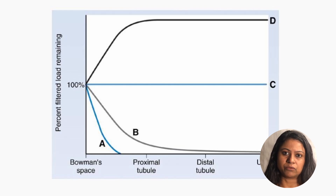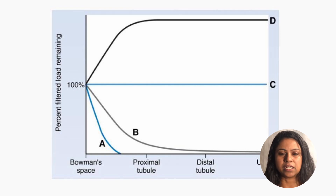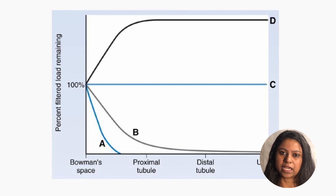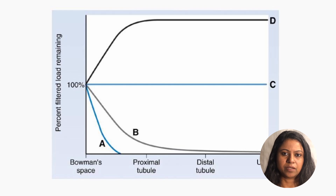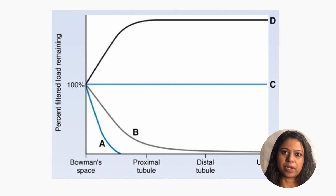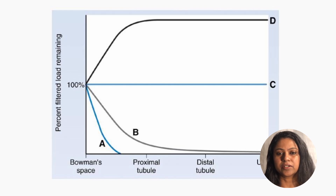Let's look at a few scenarios likely to be tested on renal clearance in the USMLE. On the graph, which plot will most likely represent PAH clearance? The answer is line D, because it has a very high tubular concentration relative to the plasma concentration. For glucose and inulin respectively, the answer is lines A and D, because glucose is one of the most highly reabsorbed substances, while inulin is not reabsorbed — it is only filtered at the glomerulus. What will be the tubular fluid to plasma concentration ratio for albumin in a healthy individual?